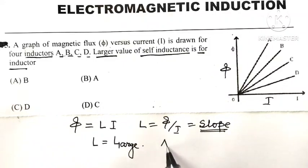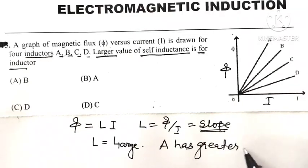So as inductor A has greater slope, means inductor A has large value of self-inductance.